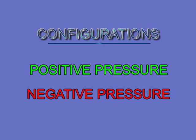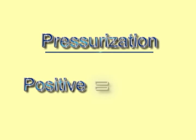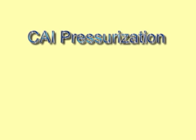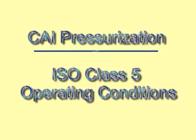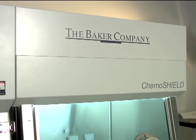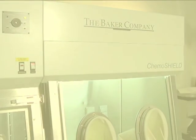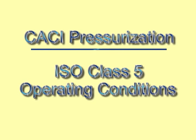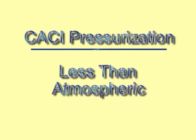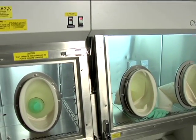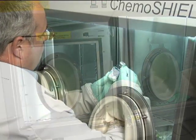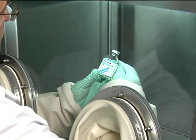The isolator is available in two configurations: positive pressure and negative pressure. The positive pressure CAI is employed where no hazardous drugs are manipulated, maintaining ISO Class 5 aseptic conditions at a unit internal pressure greater than outside atmospheric pressure. The negative pressure CACI is employed where hazardous drugs are used, producing ISO Class 5 conditions at an internal pressure less than outside atmospheric pressure, resulting in a slight relative vacuum within the anti and core chambers. This under-pressurization ensures any unit leakage will be inward rather than outward, containing hazardous drug residues.